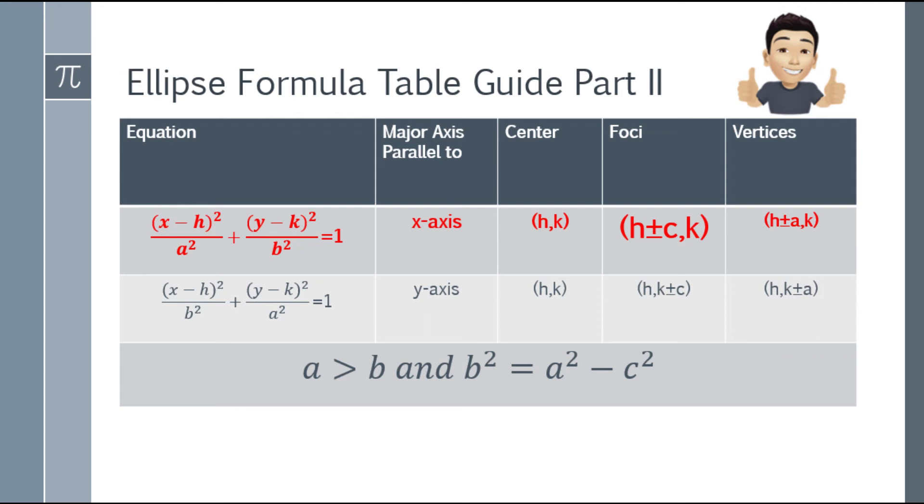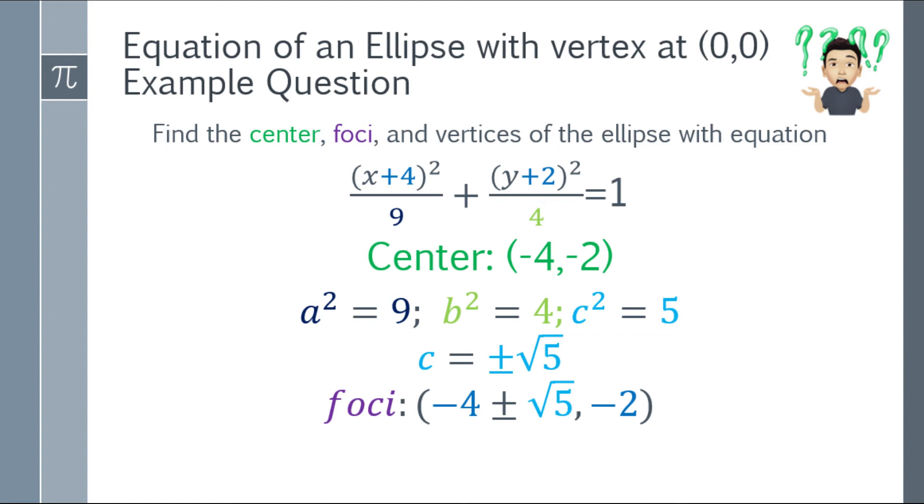Okay, so now that we know c, we can find the foci. Based on the table, the foci is h plus minus c, k. So our foci will be negative 4 plus minus square root of 5, comma negative 2.